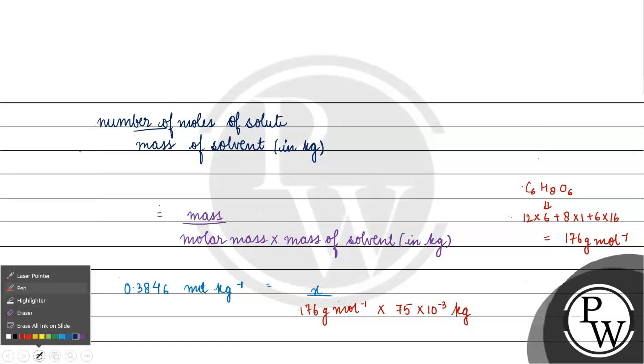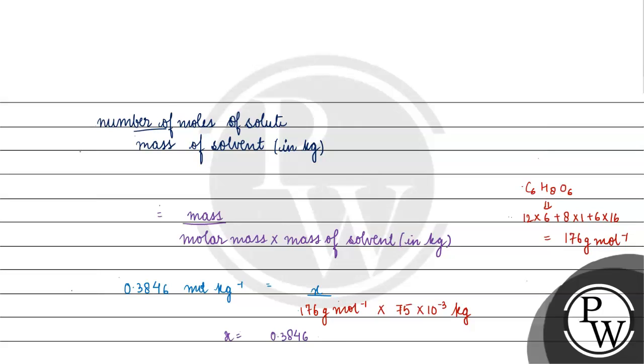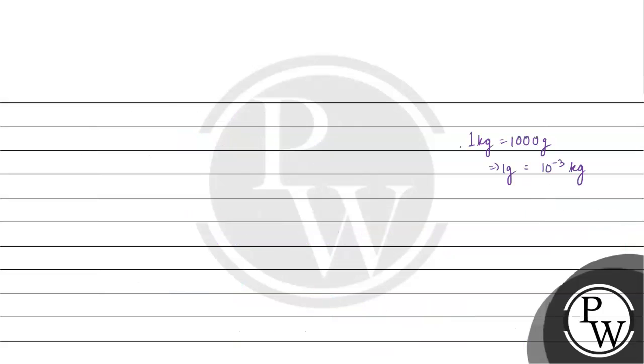Now solving for x: x = 0.3846 moles per kilogram × 176 grams per mole × 75 × 10⁻³ kilograms. Kilograms cancel, moles cancel, and x comes out to be 5.07 grams.